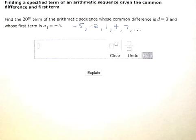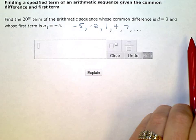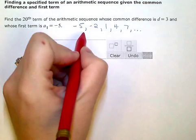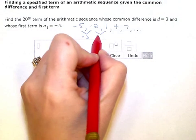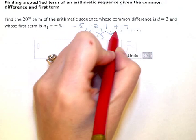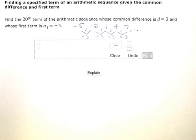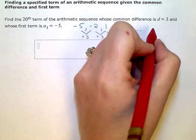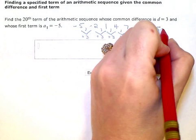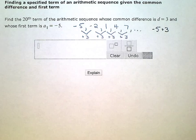Now I want the 20th term. So I could just continue this add 3, add 3, add 3 pattern until I get to the 20th term. Or I could use the pattern to my advantage and say, okay, if I'm starting with negative 5 and I know I'm going to add 3 a certain number of times.